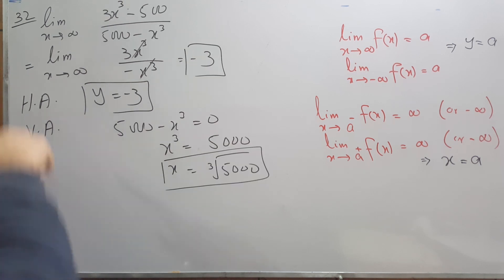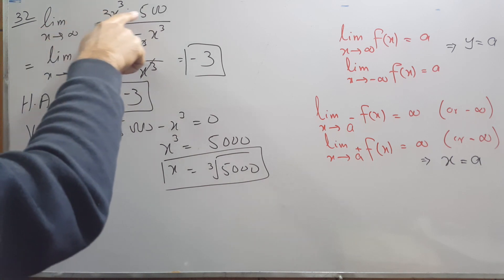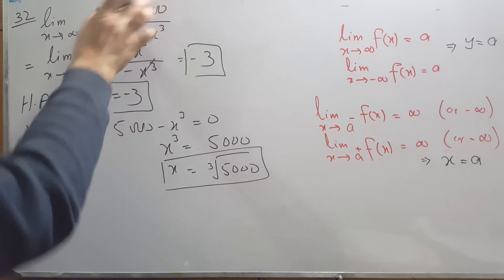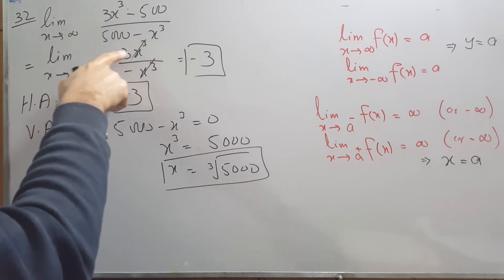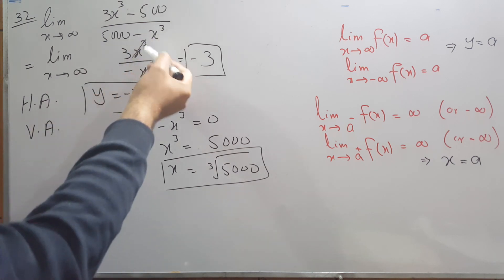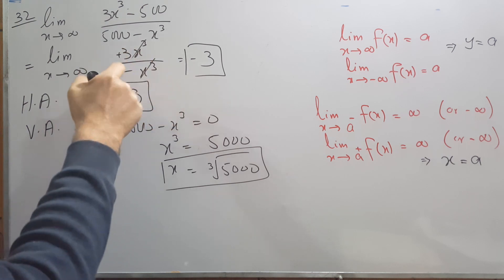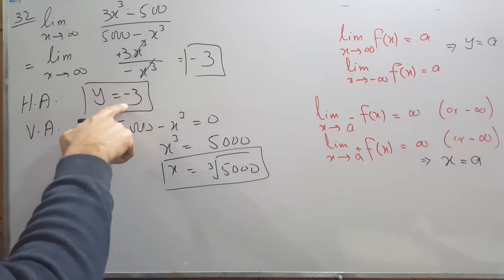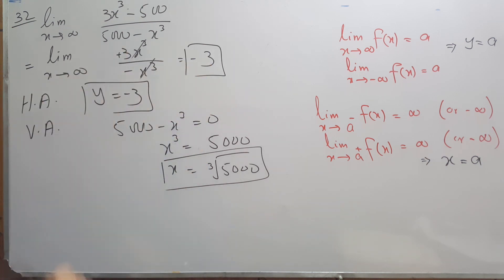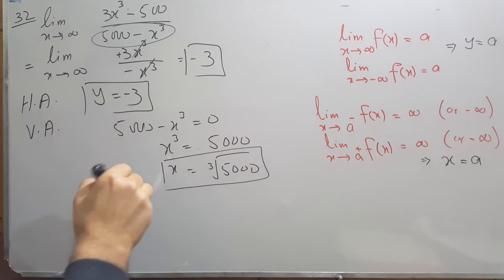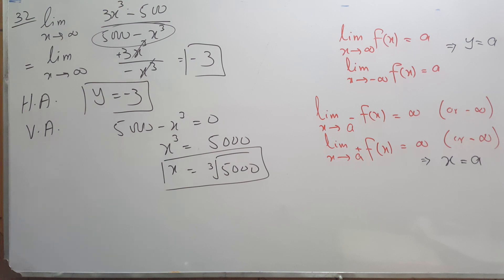The final question has (3x³ - 500)/(5000 - x³). The highest power in the numerator is 3x³ and in the denominator is -x³. The x³ terms cancel, leaving 3 divided by -1, which equals -3. So the limit is -3 and the horizontal asymptote is y = -3. For the vertical asymptote, we set the denominator 5000 - x³ = 0 and solve, giving x equals the cube root of 5000.